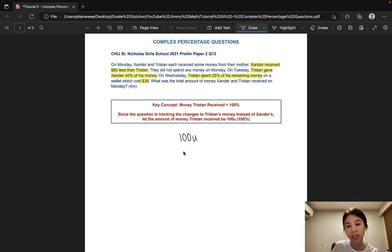So Tristan had 100 units at first. This is his original amount. On Monday, he did not spend any money. But on Tuesday, he gave Xander 40% of his money.